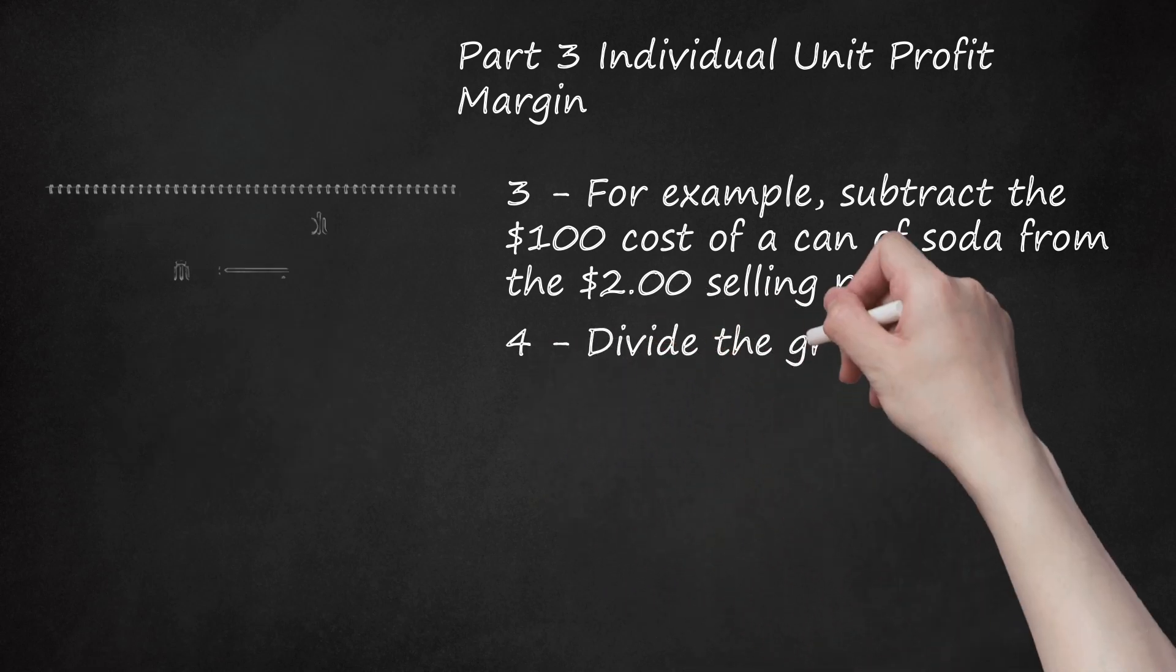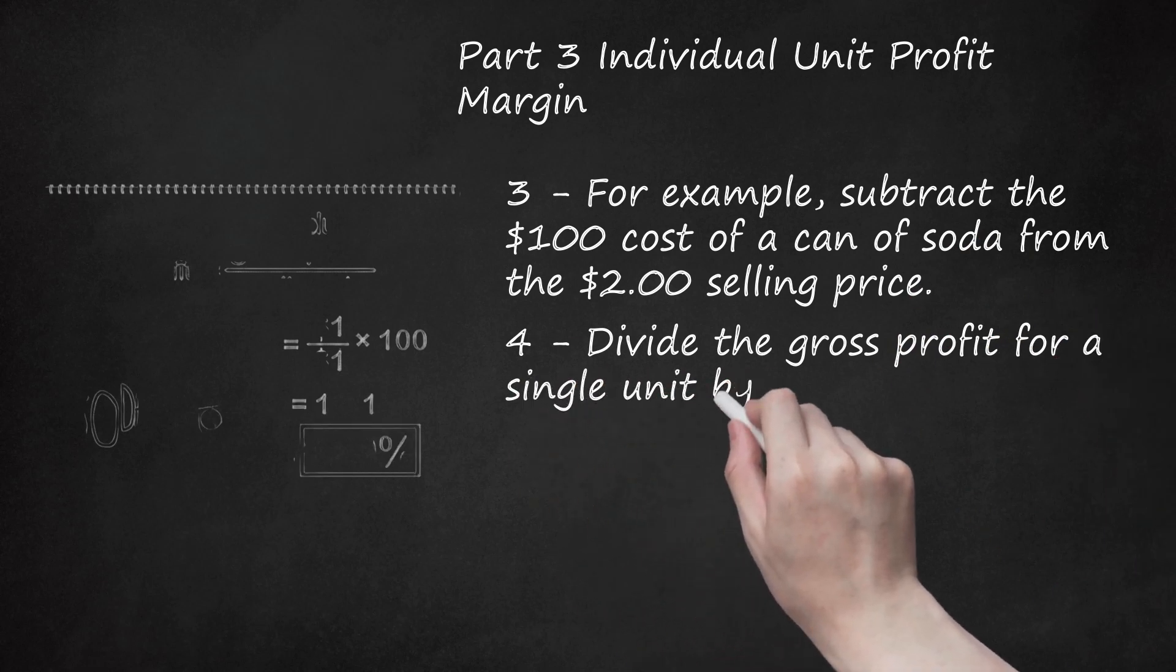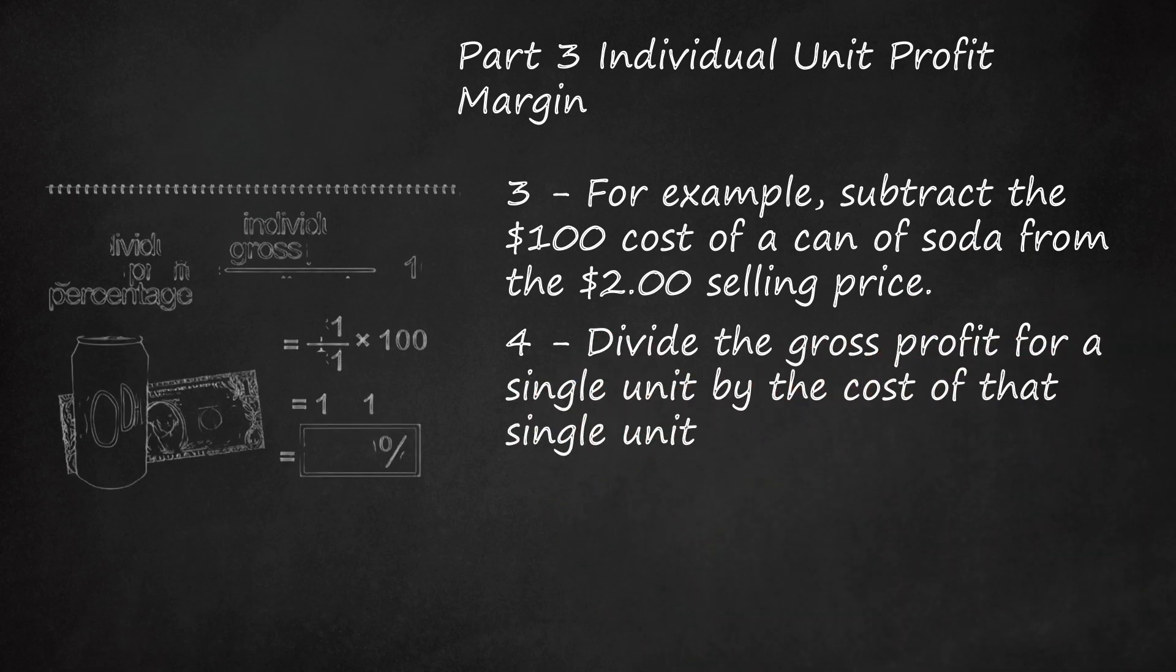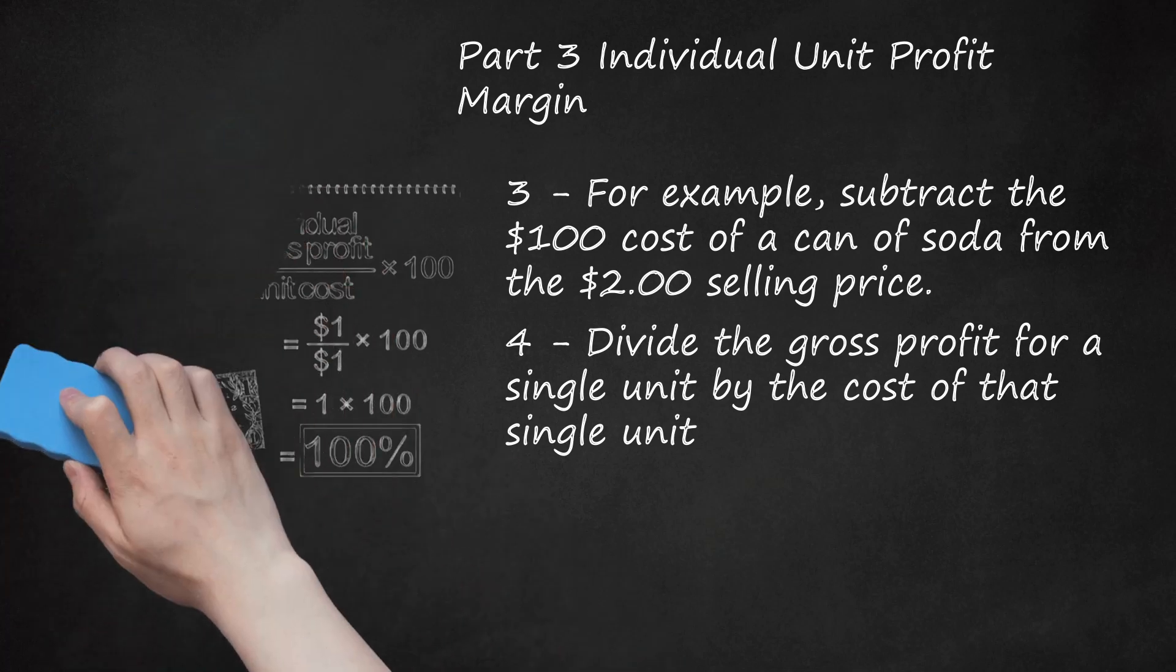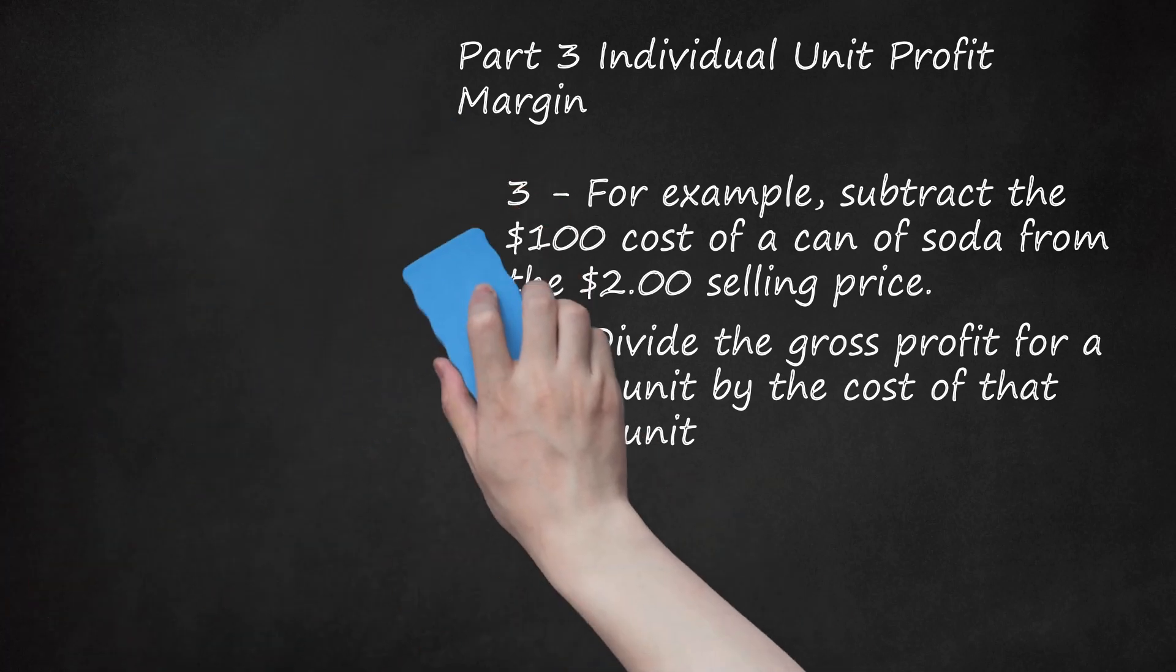Step 4: Divide the gross profit for a single unit by the cost of that single unit. Multiply by 100 to get the percentage. In our example, the gross profit margin is $1 divided by $1, so we get a profit margin percentage of 100%.